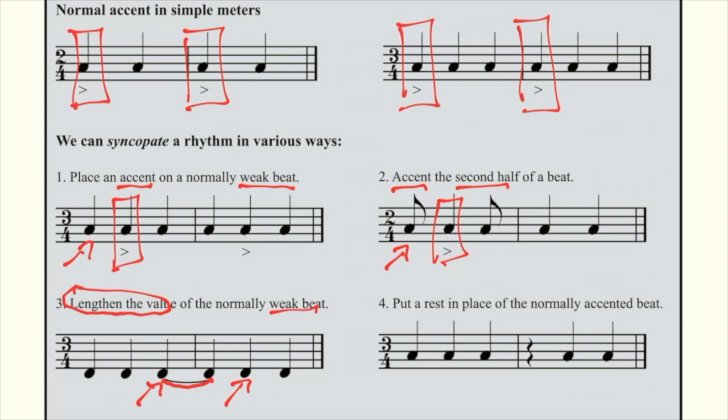The fourth variation is simply placing a rest in the normally accented beat. It's demonstrated here. We're going to place a rest on the first beat. This is how this variation sounds.